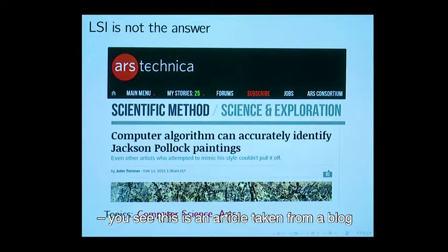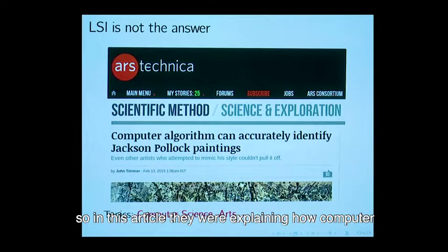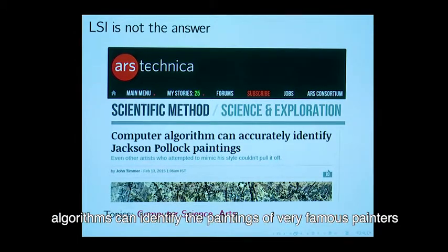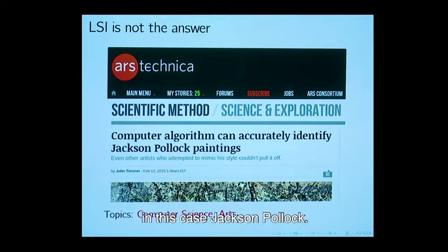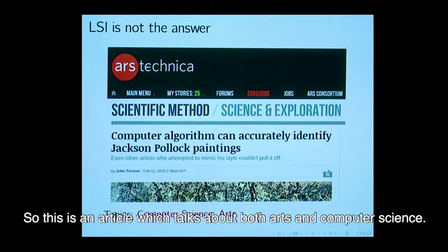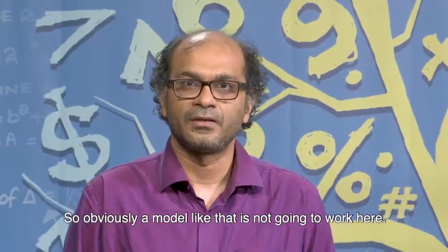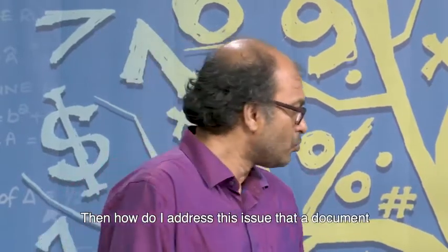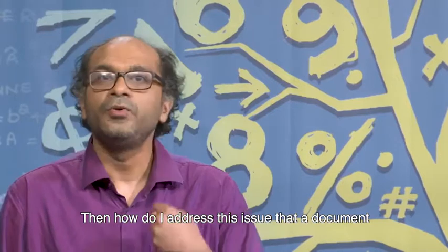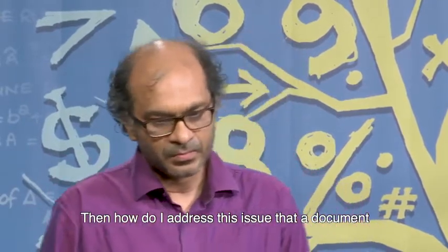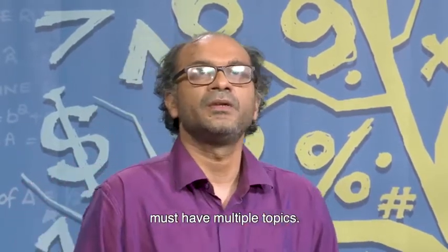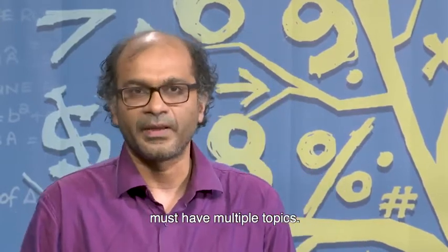Here is a good example. You see, this is an article taken from a blog. In this blog article, they were explaining how computer algorithms can identify the paintings of a very famous painter, in this case Jackson Pollock. This is an article which talks about both arts and computer science. Obviously, models like that are not going to work here.